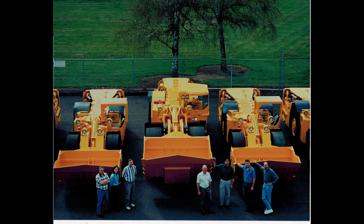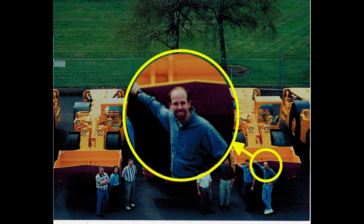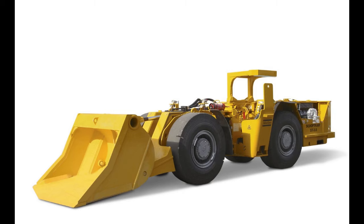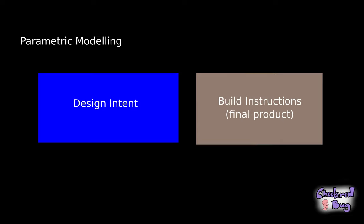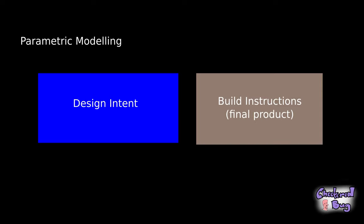Back in the late 90s I used to work for a company that made mining equipment — large loaders that would pull large chunks of dirt and move it around underground in a mine shaft. In my lunch hour I even took the hand drawings of this vehicle and modeled them in the computer from the ground up. A mechanical engineer will use a parametric modeler to put a design into a computer and make it easy to change later. He starts with design intent, then adds build instructions — the goal being to know the design works and make it easy to modify and build.